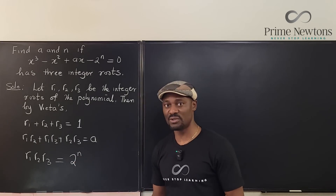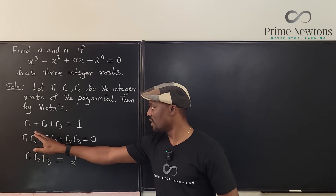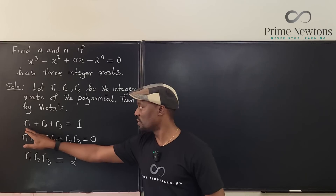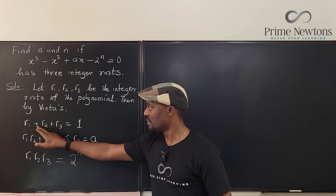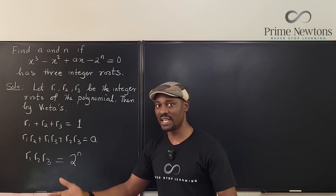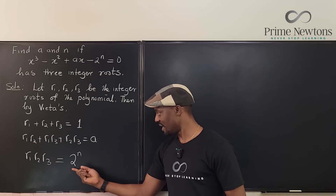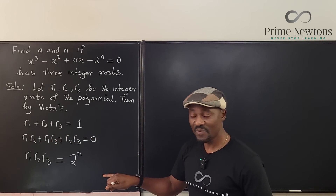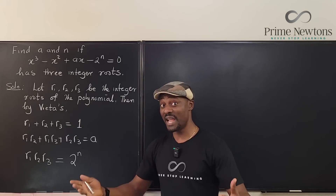The smallest 2^n can be is 1 (when n = 0), so zero is not an option for any root. If one root is -1 and two others cancel (one positive, one negative), their product would be negative. But 2^n is always positive, so a negative product is impossible. The three roots cannot all be negative either, since the sum of three negative numbers cannot be positive.